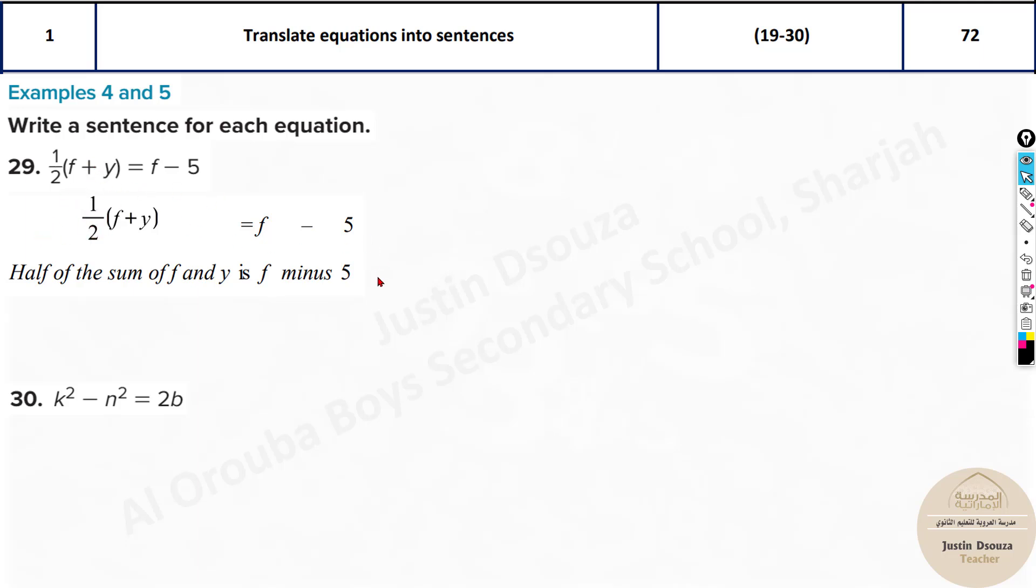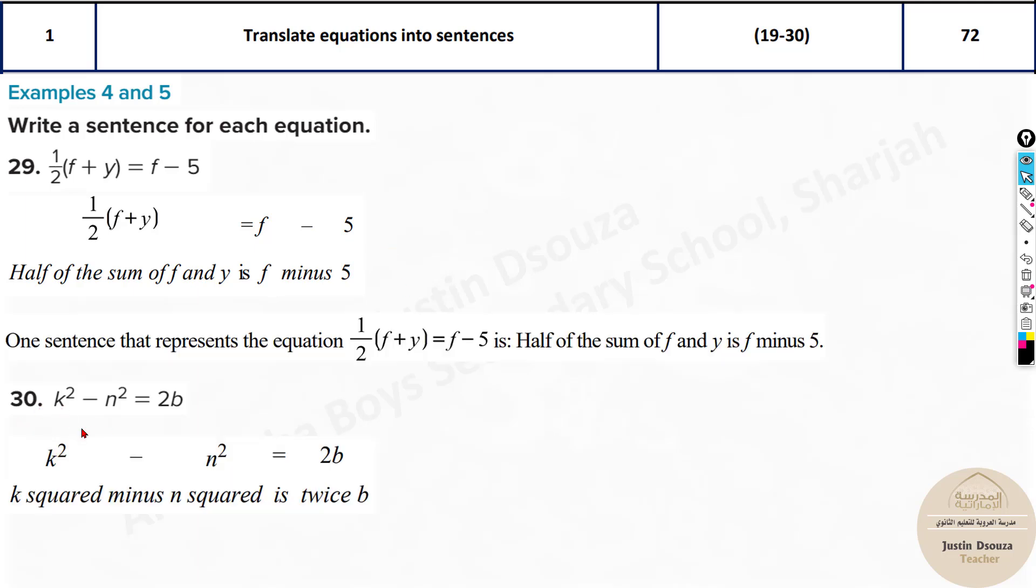So please carefully read all the four options and see. Here, one by two you can write half. One by two is told as half. One-fourth is quarter. So one by two or half, the sum of f plus y equals f minus five. And here, k squared minus n squared is two times b, or twice b. That's the same thing. Twice means two times.